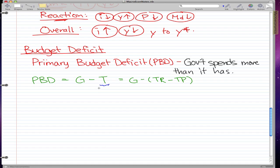The formula is government spending minus the net taxes which is represented by T. This is pretty much equal to government spending minus the tax revenue minus the transfer payments.